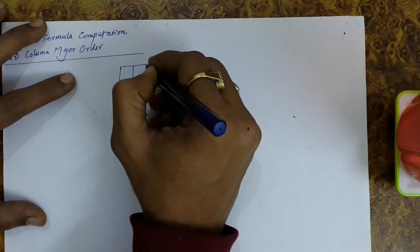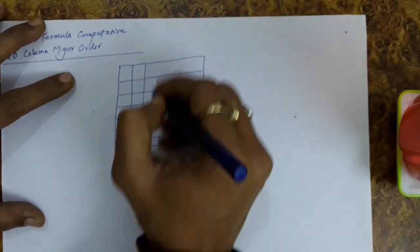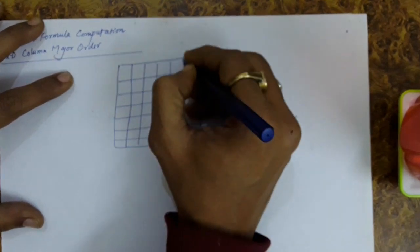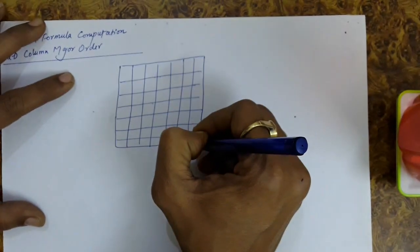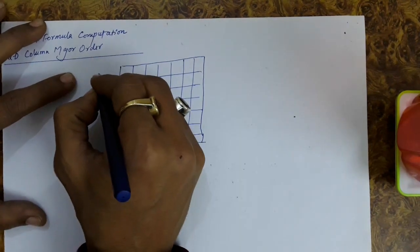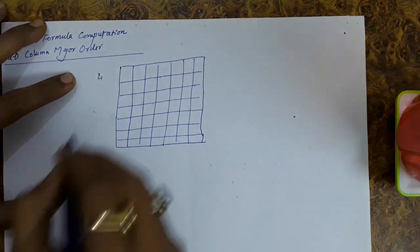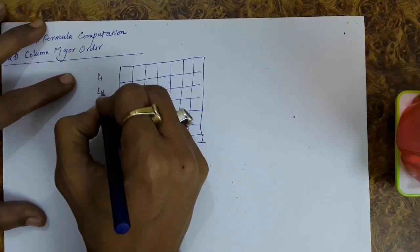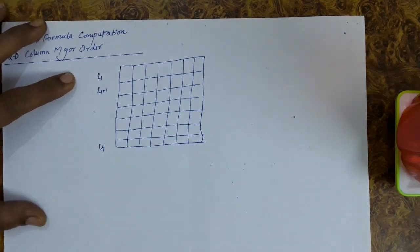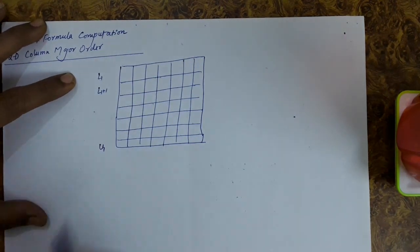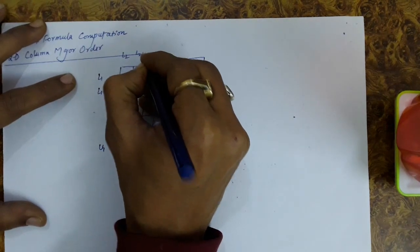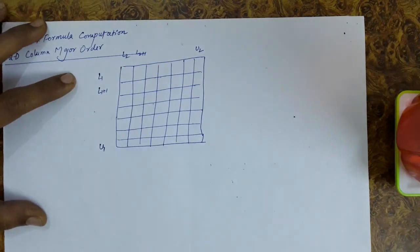For the computation, consider this array where l1 is the first index on the row side, l1+1 is the second index, and u1 is the last row index. Similarly, l2, l2+1, and so on up to u2 are the column indices.